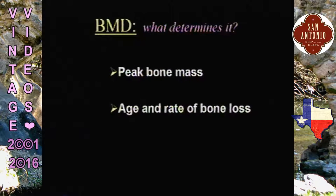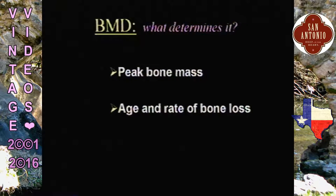What determines bone mass are two things. One is the peak bone mass attained during growth in adolescent years — 80% of that is determined by genetics. That's why it's important to ask about family histories of osteoporosis, because chances are they may not have obtained their peak bone mass during growth in adolescence.